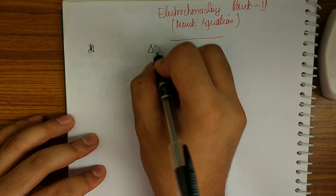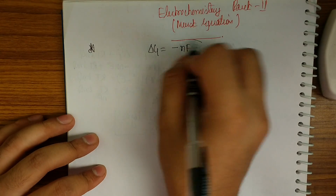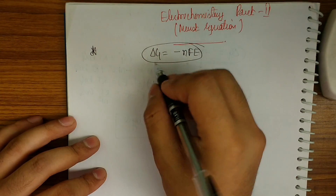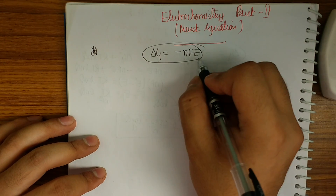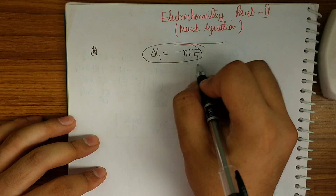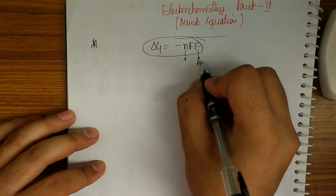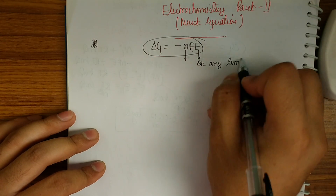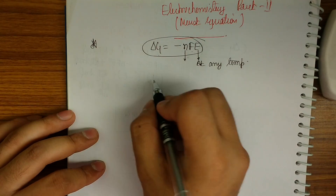What is ΔG? It is Gibbs free energy. N is the number of electrons transferred. F is Faraday's constant and E is the potential of the cell at any temperature or at any other condition that the question asks.